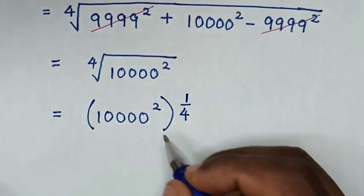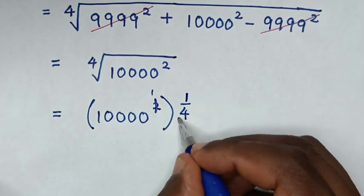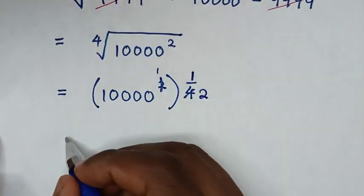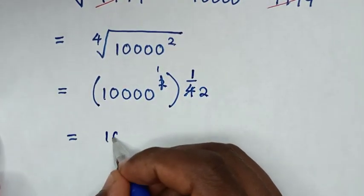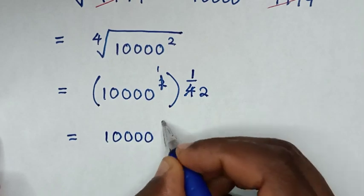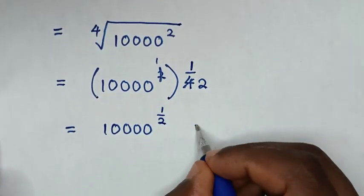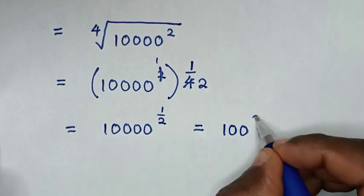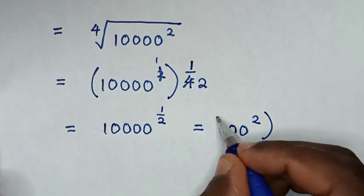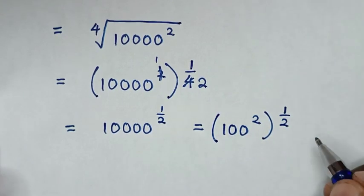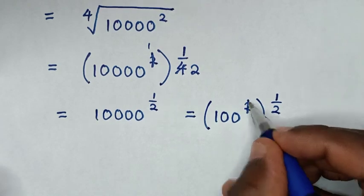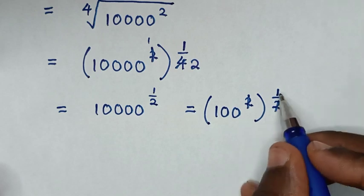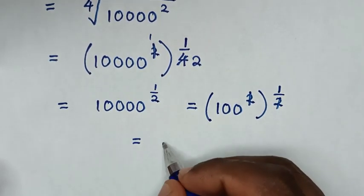To simplify, the powers cancel. It will be equal to 10,000 to the power of 1 over 2. Now, 10,000 is the same as 100 squared, then to the power of 1 over 2. Simplifying, 2 and 1 over 2 cancel, giving 100 to the power of 1, which is equal to 100.